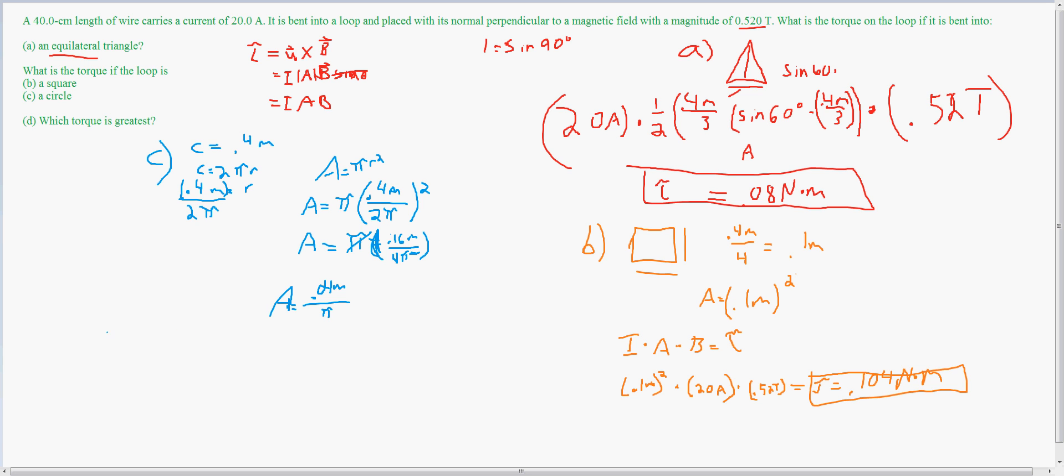So again, I times A times B: 20 amps times 0.04 meters divided by pi times 0.52 tesla is equal to the torque. And the torque is equal to 0.1324 newton meters.